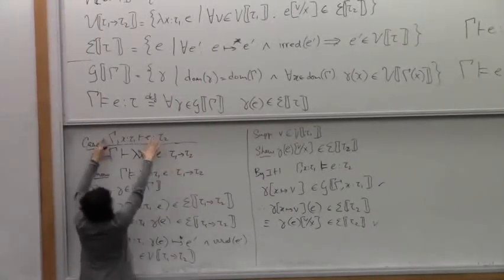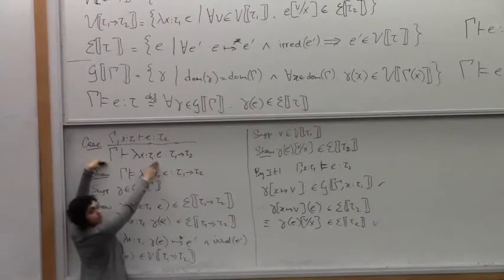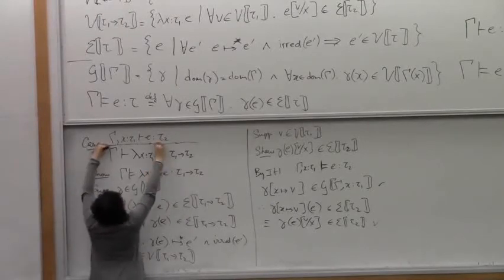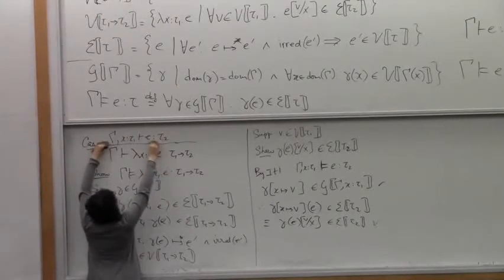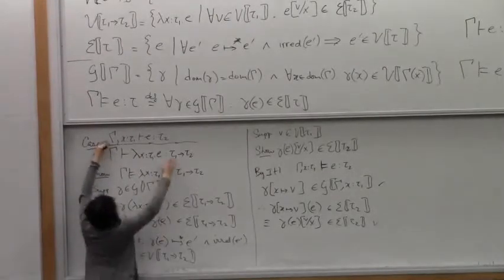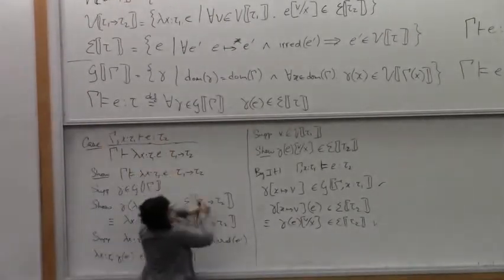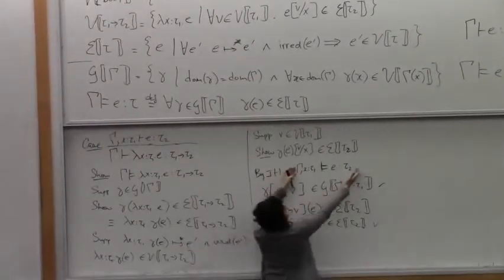We have a typing derivation that ends with this, right? So the typing derivation that ends with this is a smaller derivation. Therefore, we can apply the induction hypothesis to conclude this.